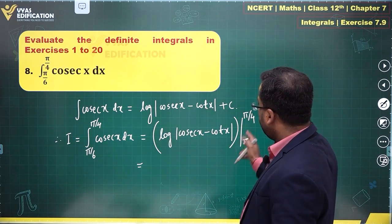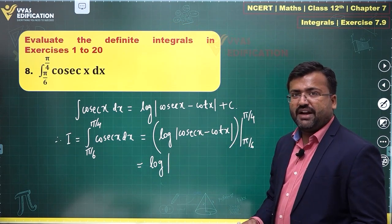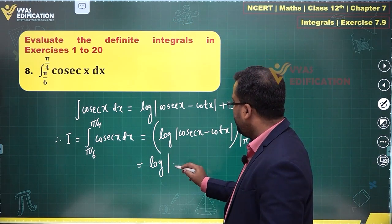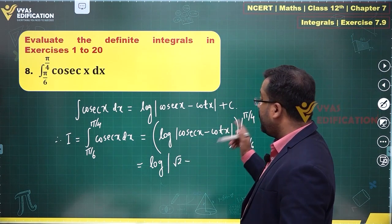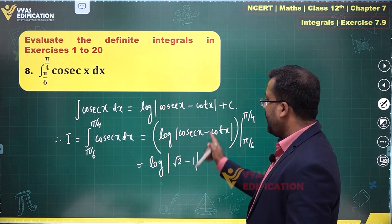What is this equal to? This is log of cosec π/4. Let me write the value of cosec π/4 directly, which is √2, minus cot π/4. What is cot π/4? Cot π/4 is 1.